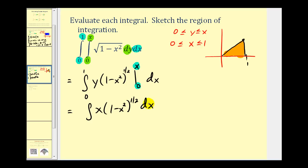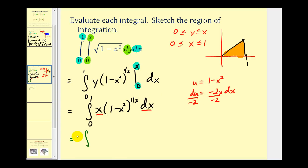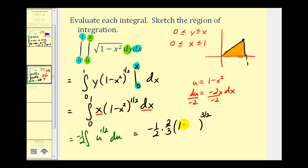So now we just need to integrate x(1 − x²)^(1/2) with respect to x, which requires u-substitution. Let u = 1 − x², so du = −2x dx, meaning x dx = −(1/2) du. Writing in terms of u, x dx is replaced with −(1/2) du and the rest is u^(1/2). Integrating gives −(1/2) times u^(3/2) divided by (3/2), which is the same as multiplying by 2/3. Substituting back, u = 1 − x², and simplifying, we have −(1/3)(1 − x²)^(3/2), which we evaluate at the limits of integration.